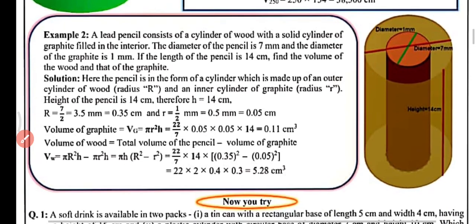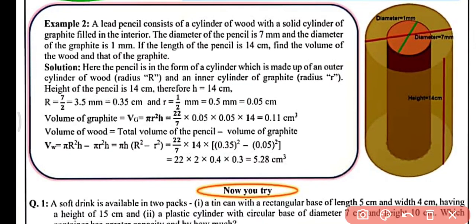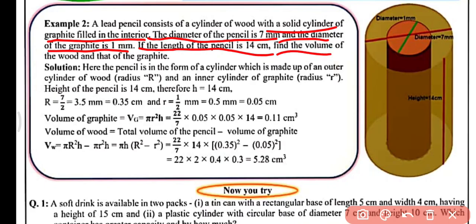Now we have example number 2. A lead pencil consists of a cylinder of wood with a solid cylinder of graphite filled in the interior. The diameter of the pencil is 7 mm and the diameter of the graphite is 1 mm. The length of the pencil is 14 cm. Find the volume of the wood and that of the graphite.